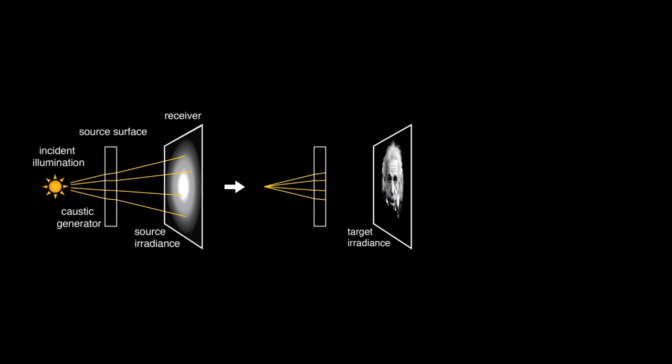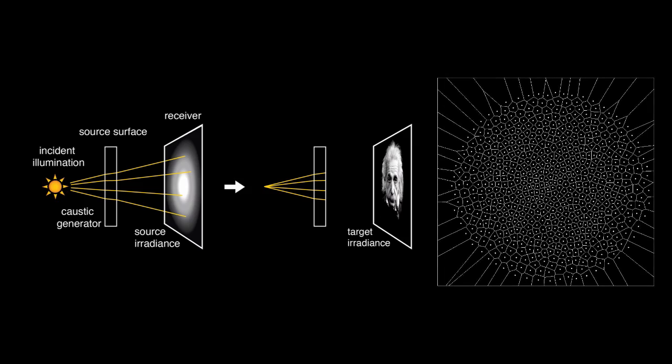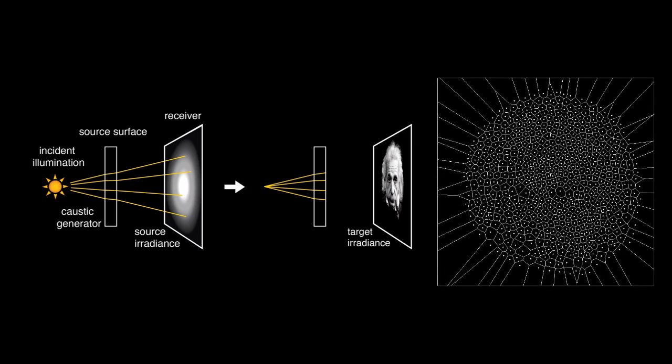We optimize for the surface using a two-step process. We model the input light distribution and the target distributions as power diagrams and find the optimal transport between the two.